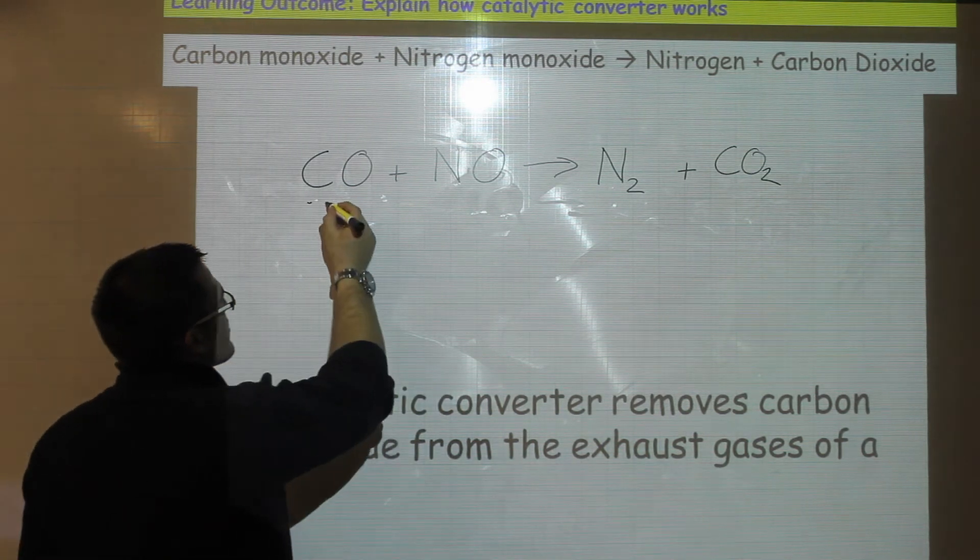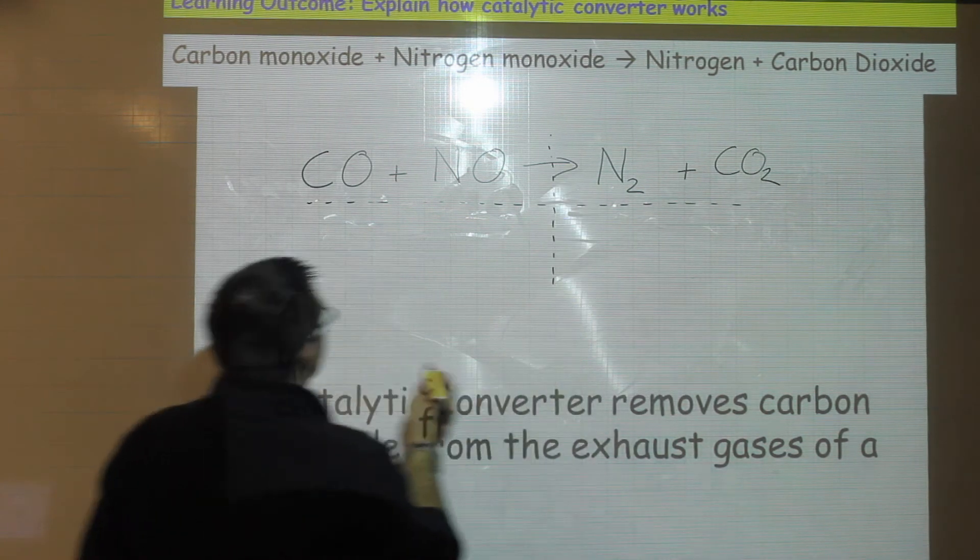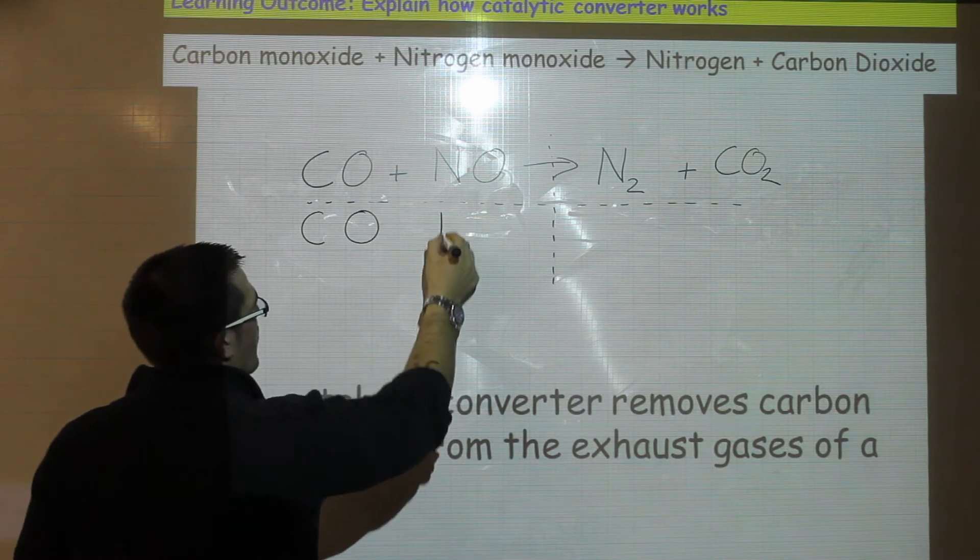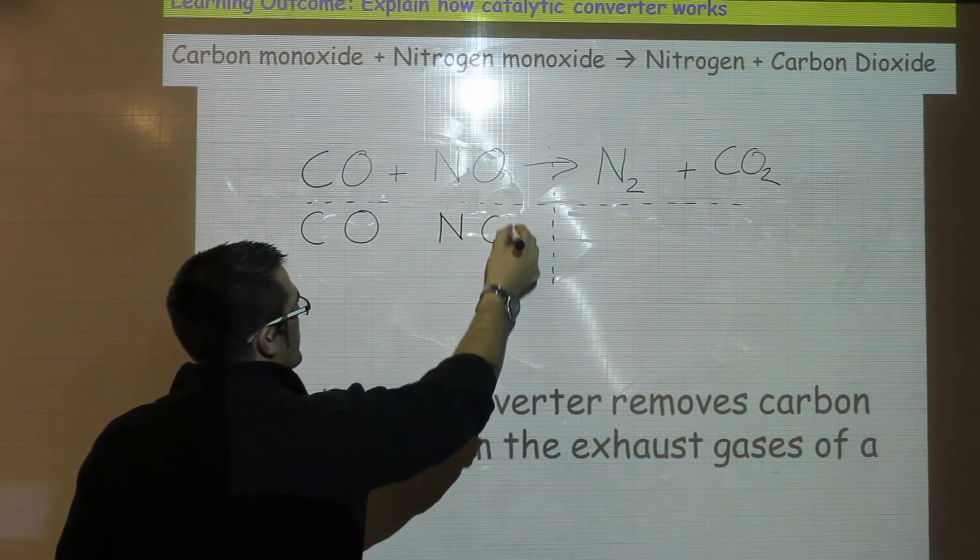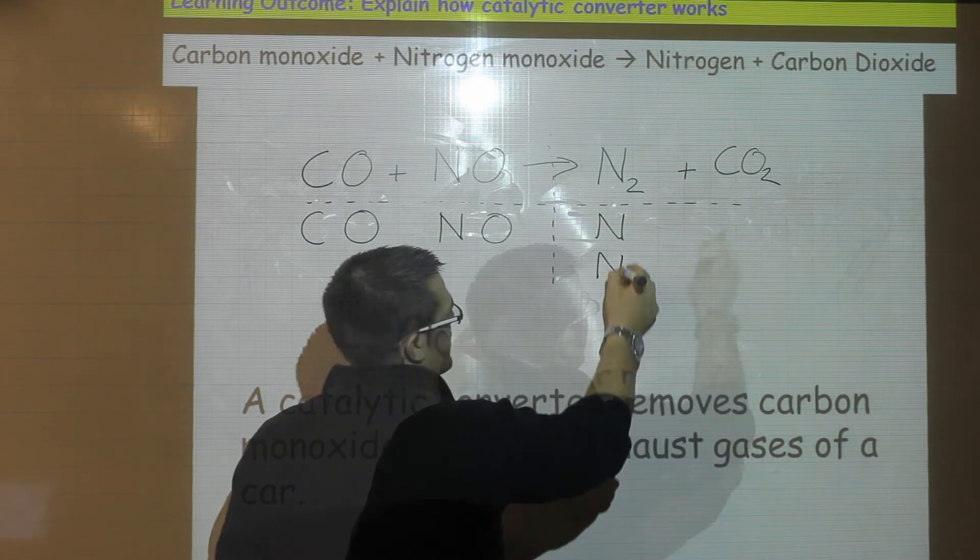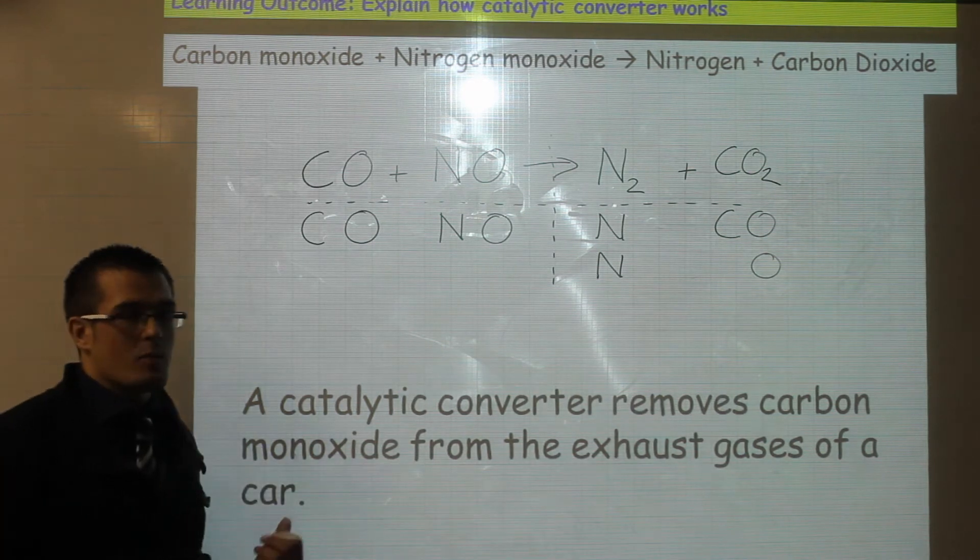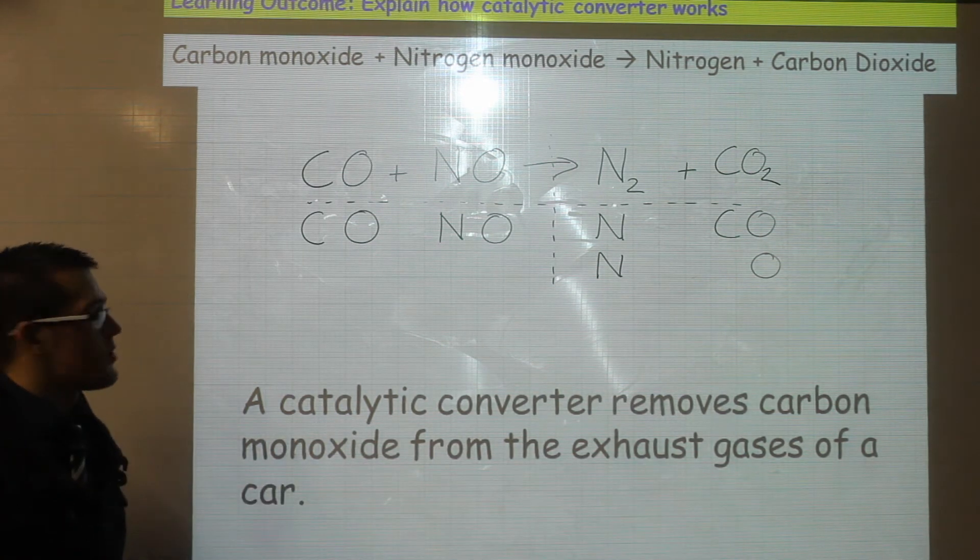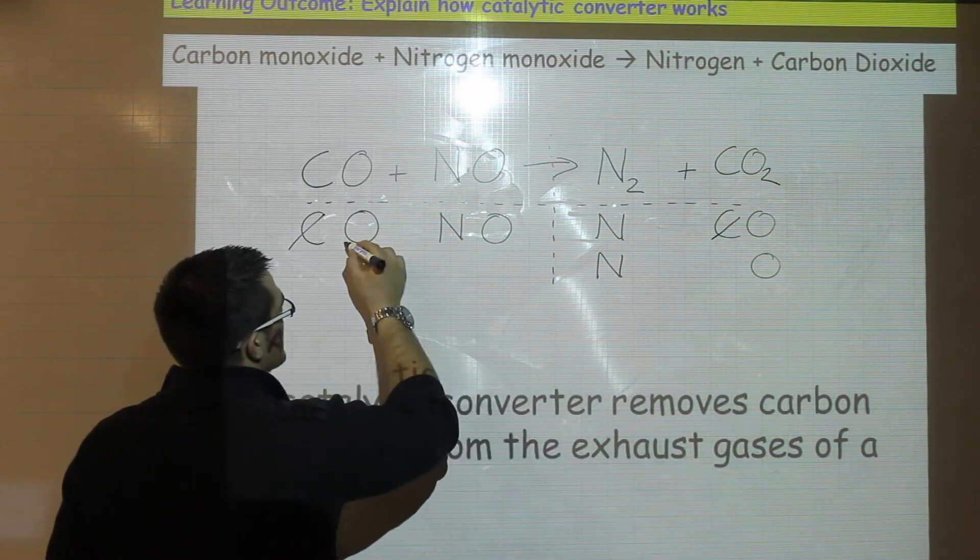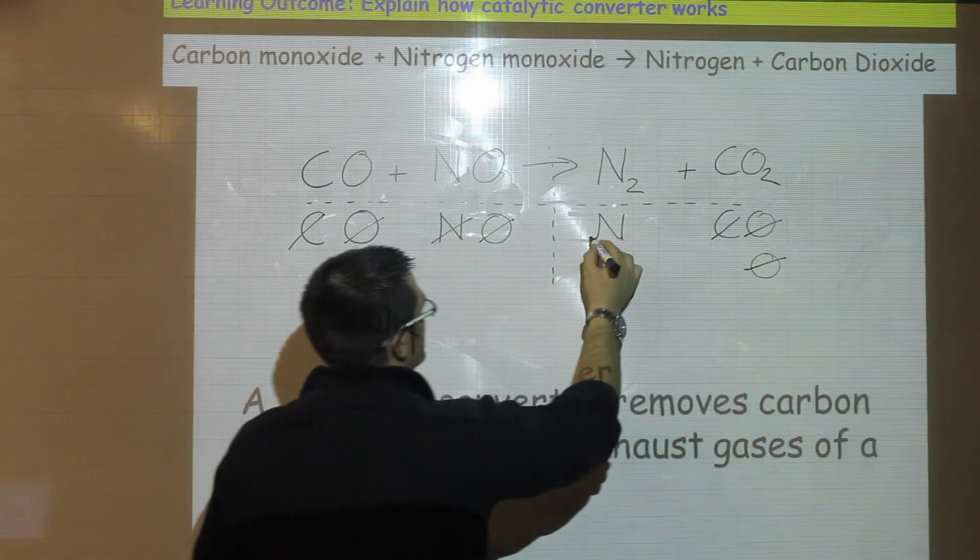So we follow our usual steps for balancing equations and split the equation into half. So we have one carbon molecule and one oxygen, one nitrogen and one oxygen. Over here we have two nitrogen molecules, one carbon and two oxygens. Our next step is to cancel out on both sides of the equation. So we can cross off our carbon, we can cross off our two oxygens and we can cross off nitrogen.